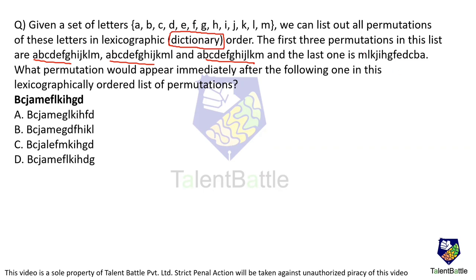We need to arrange them in lexicographic order, means dictionary order. And they gave us the last one also here. If you observe, the last one is nothing but reverse of them. What permutation would appear immediately after the following one? Means this particular word. So we need to identify which is going to come immediately after this. So let's try to go with the options. If you observe, everything is going to start with B, C, J, A.